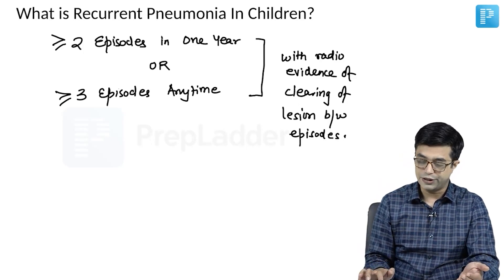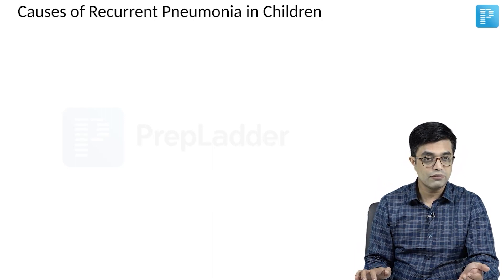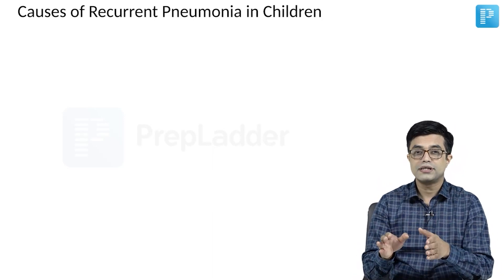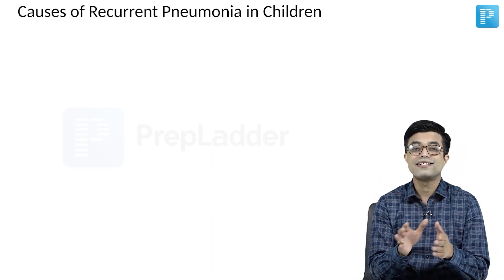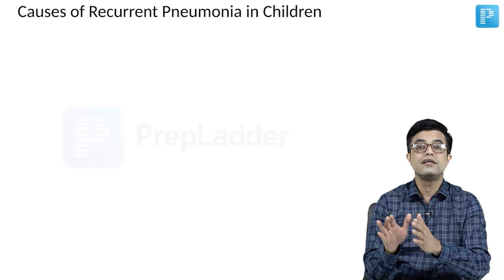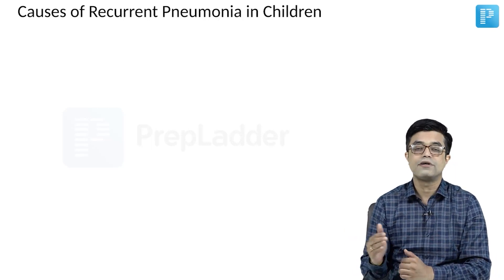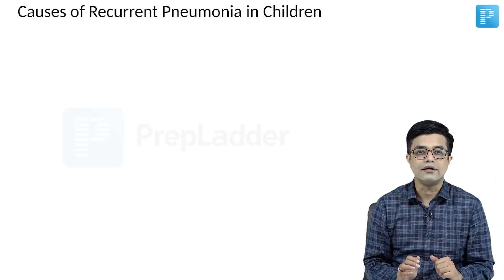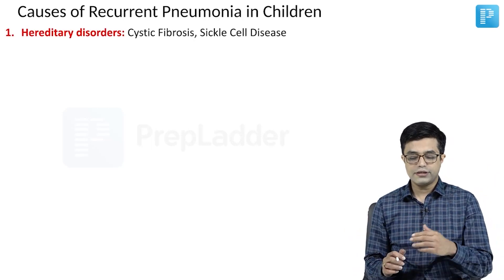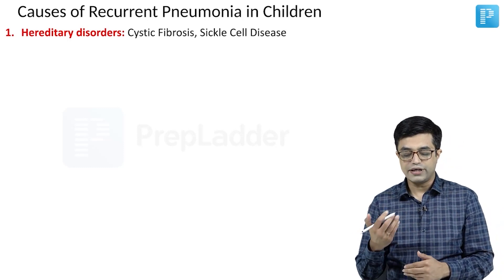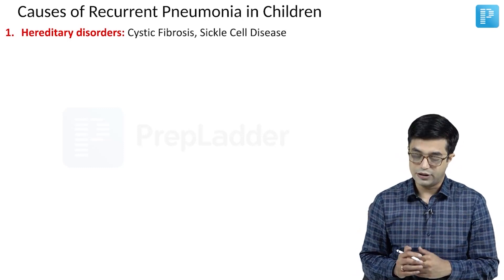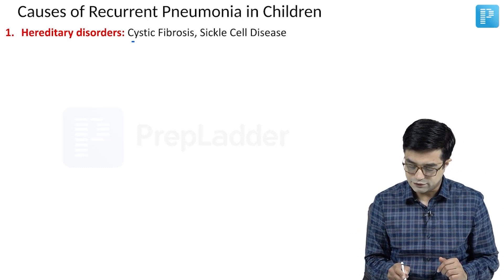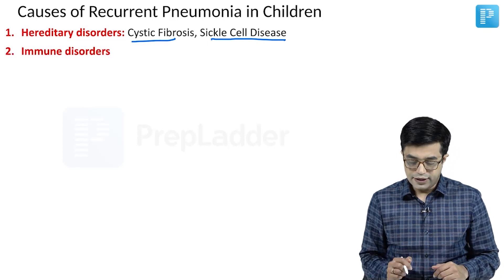What are the causes of recurrent pneumonia in children that you need to remember? These causes are not the risk factors for pneumonia — they are causes of recurrent pneumonia in children, different from the risk factors discussed earlier. First, hereditary disorders will cause recurrent pneumonia in children. Two hereditary disorders are cystic fibrosis and sickle cell disease.